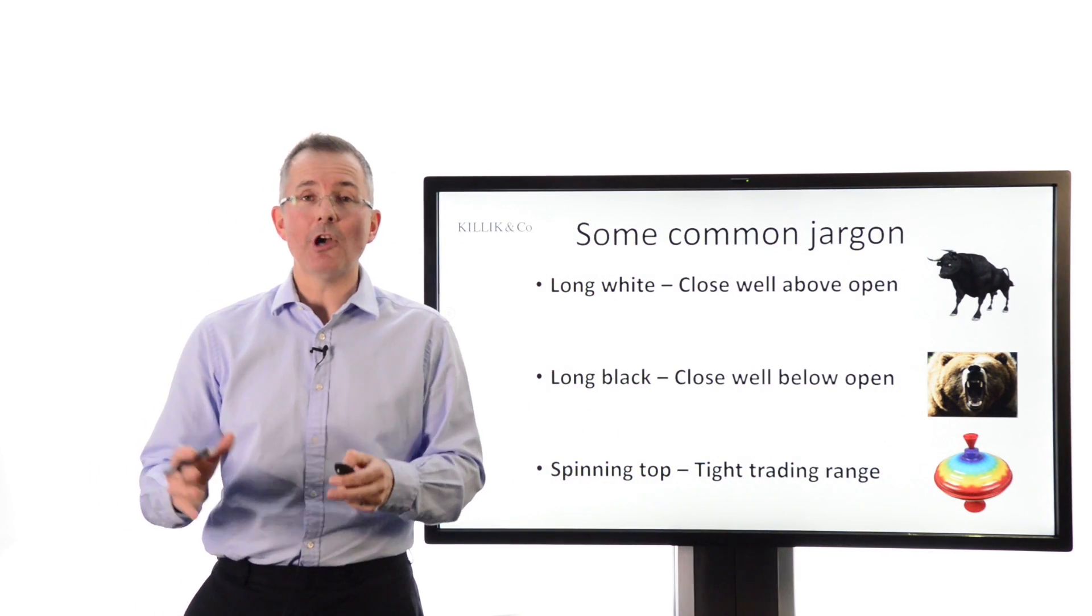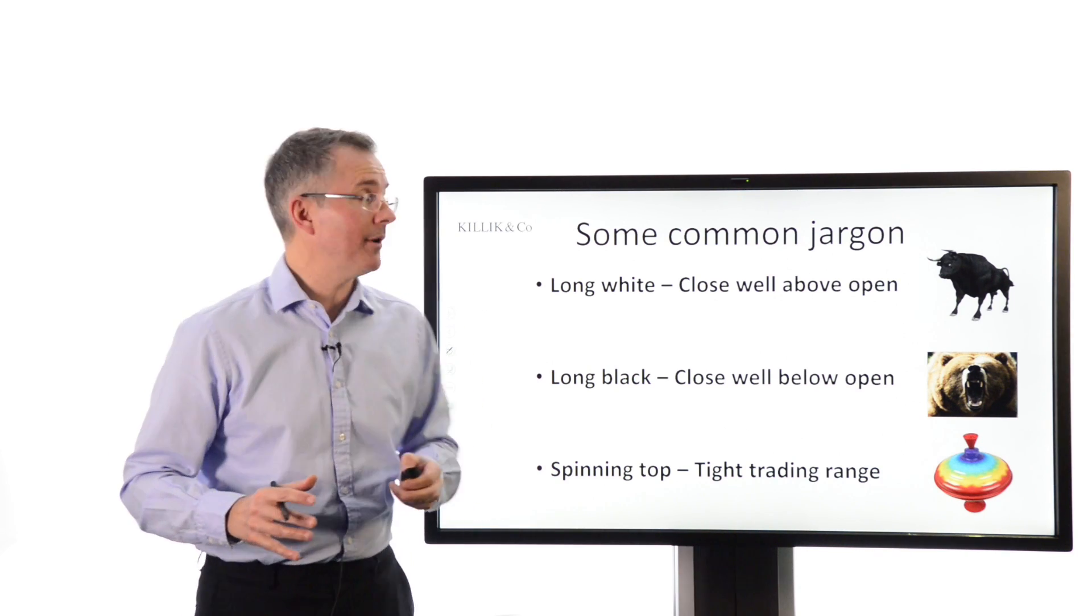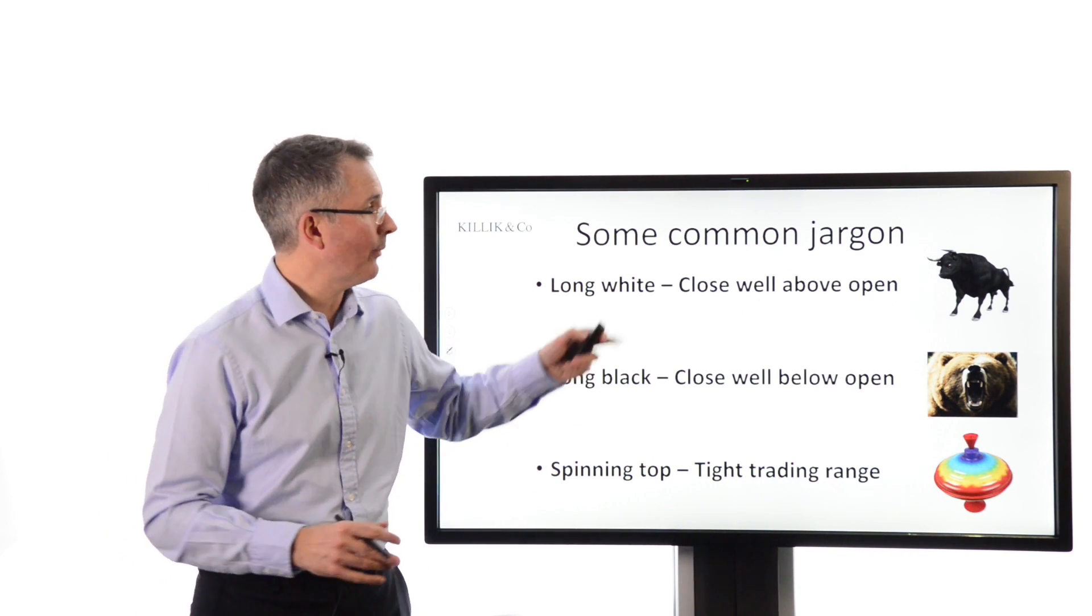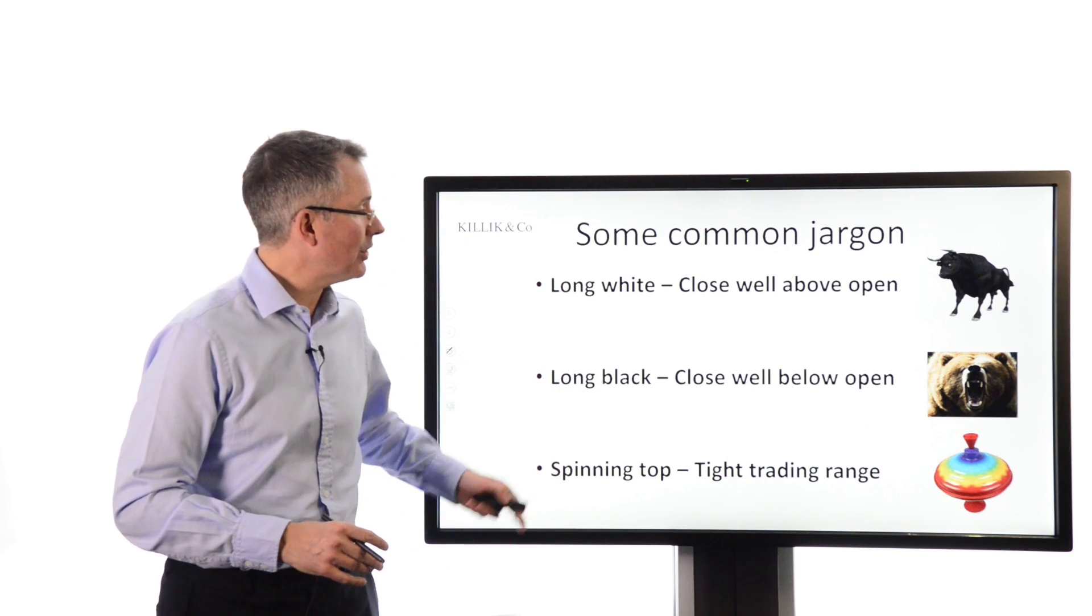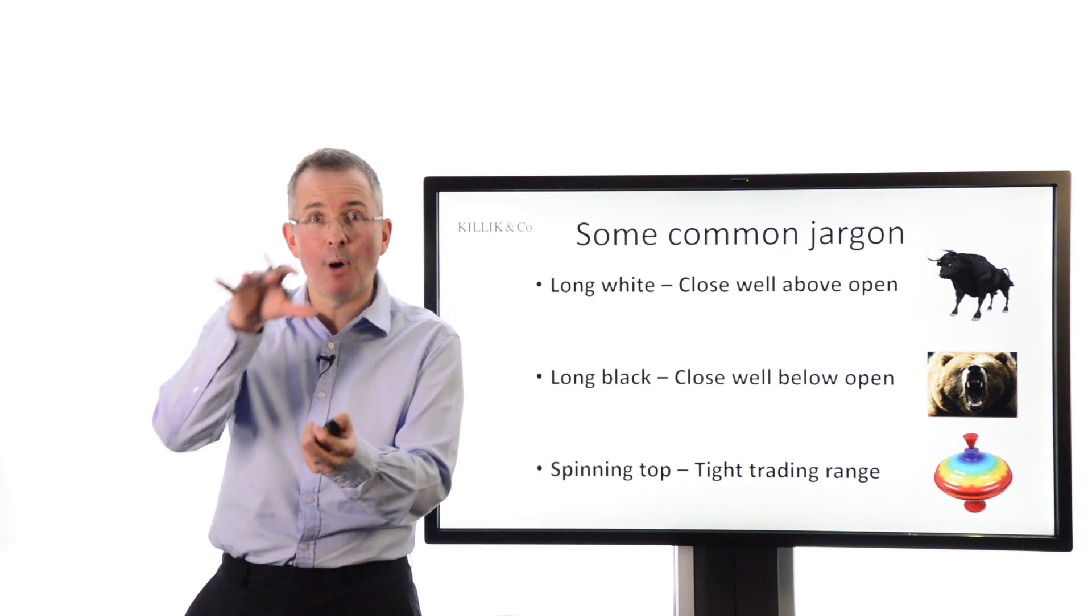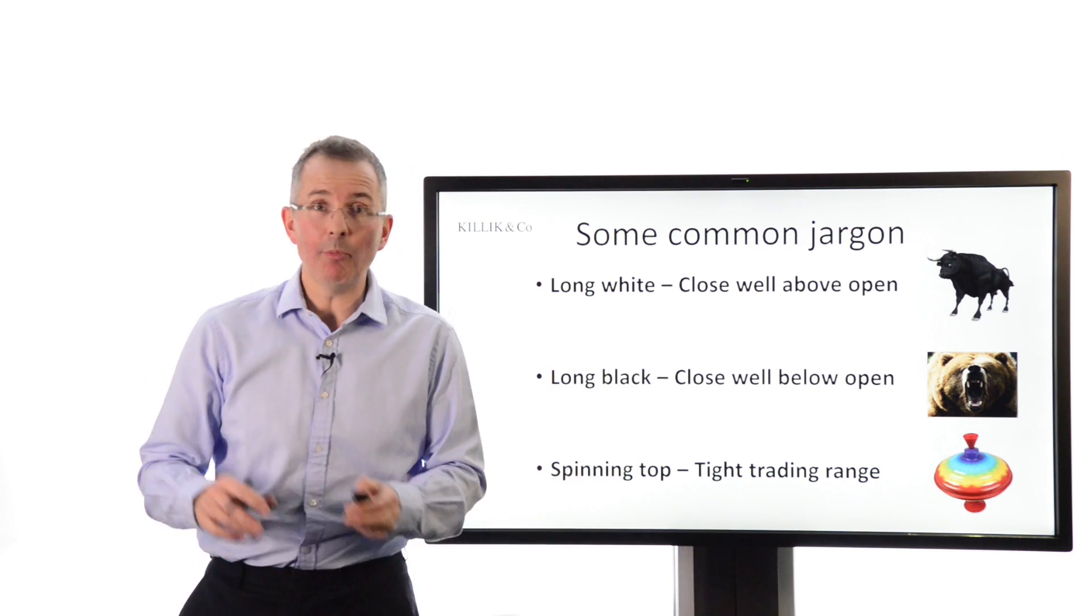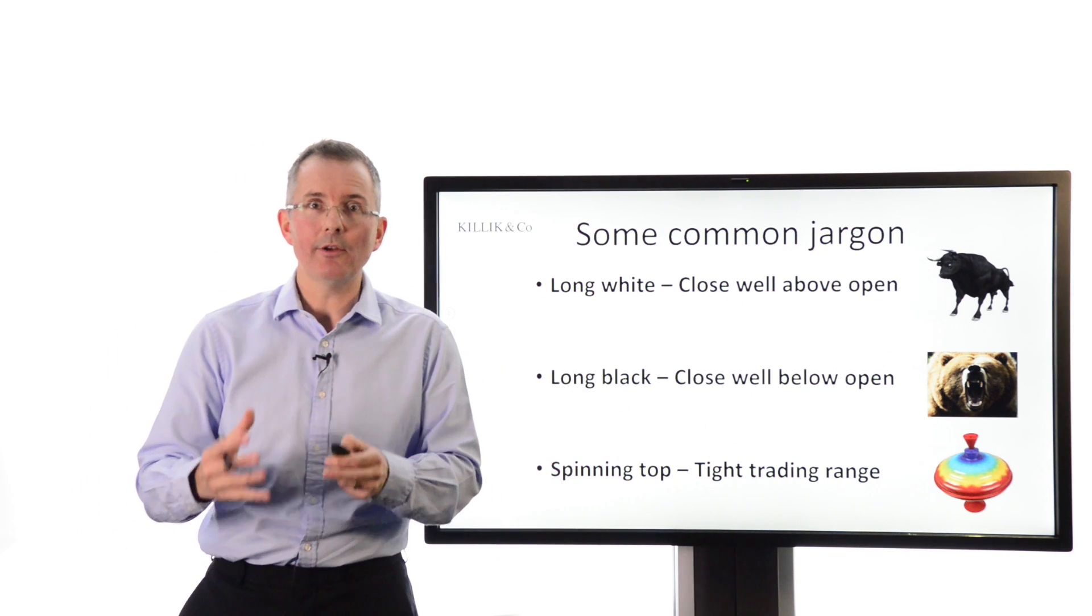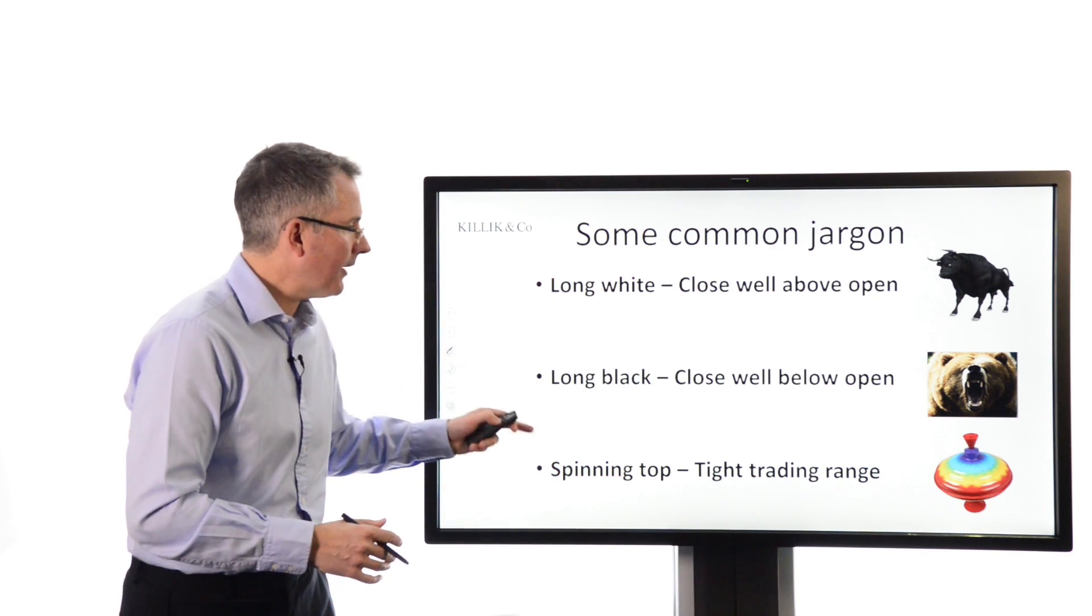Now two or three pieces of jargon, there's loads, and we will cover this more in other videos. A long white, you saw one of those, that's where a close is well above the open. That's pretty bullish. A long black, that's the box in the middle, where the close is well below the open. That's bearish. And these things can be supported by other indicators. And a spinning top, a tight trading range, is kind of neutral.